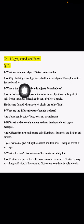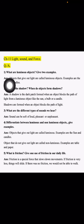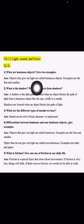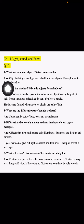Our first question is: What are luminous objects? Give two examples. The answer is: Objects that give out light are called luminous objects. Easy examples are the sun, candles, bulbs, and tube lights. These are all examples of luminous objects.